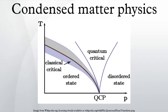External magnetic fields: In experimental condensed matter physics, external magnetic fields act as thermodynamic variables that control the state, phase transitions and properties of material systems.